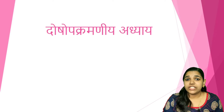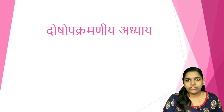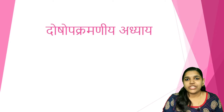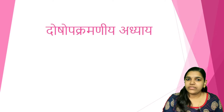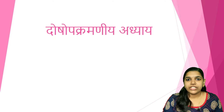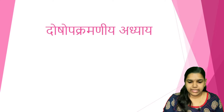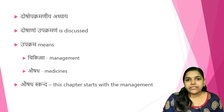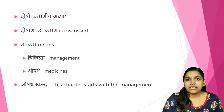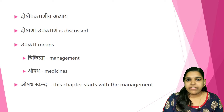Till now we have discussed the 12 chapters of Ashtanga Hrudaya Sutrasthana. If you have not watched those videos, please click the i button to access them. Moving with the 13th chapter, Dosha Upakramaniya Adhyaya. Within the 11th and 12th chapters, the matters regarding the Doshas have been mentioned.